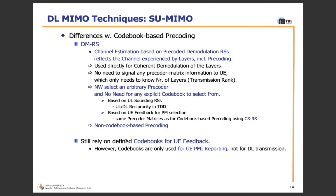Non-codebook-based precoding still relies on defined codebooks for UE PMI reporting, but those codebooks are only used for UE PMI reporting and not for the actual downlink transmission.